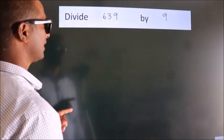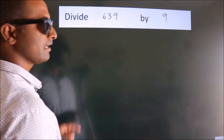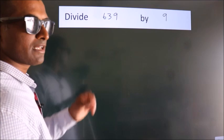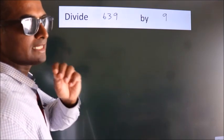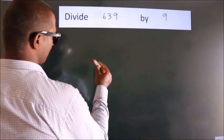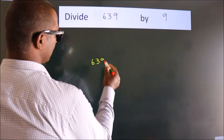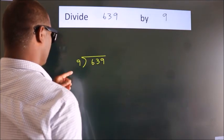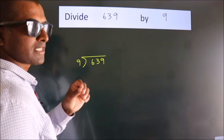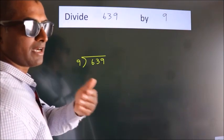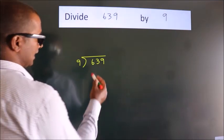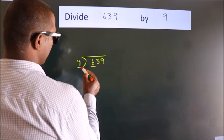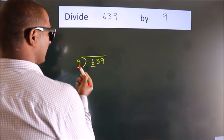Divide 639 by 9. To do this division, we should frame it in this way: 639 here, 9 here. This is your step one. Next, here we have 6 here, 9. 6 is smaller than 9.